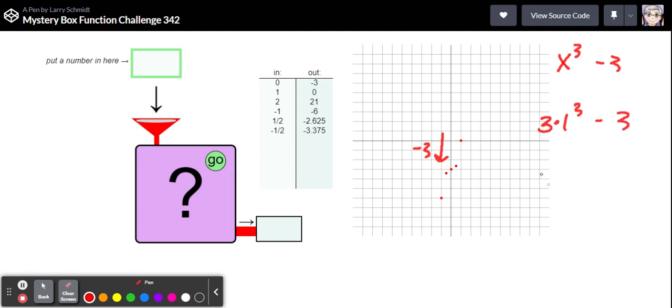So I think this is what's going on here: three times one cubed minus three that gives us zero here and that makes sense that's what we're getting with one. Let's actually try this with a couple other values here. Let's go ahead and put in that two.